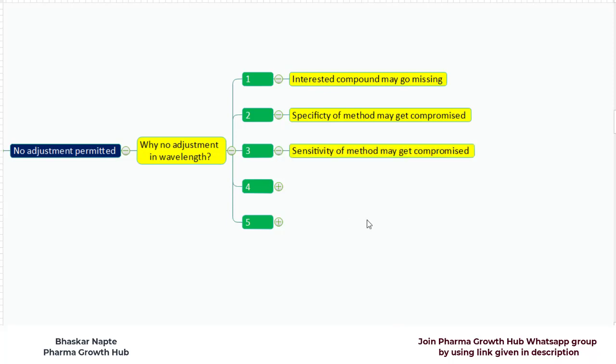The third reason: sensitivity of method may get compromised. If you select a wavelength where the analyte has poor absorption, this poor absorption will result in a poor response which will end up with poor sensitivity for your analytical method.